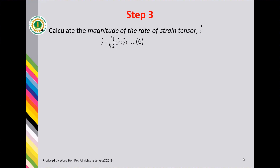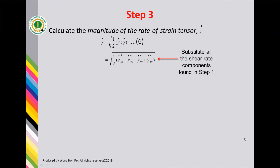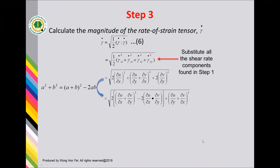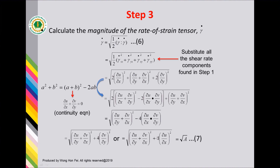Step three: calculate the magnitude of the rate of strain tensor, given by equation 6. Many of us may not be familiar with equation 6. The double-dot notation here is called the Frobenius norm, which is the square root of the summation of the squares of the elements in every row and every column. Substituting all shear rate components from step one, I apply the identity a² + b² = (a+b)² - 2ab. The term (a+b) is actually the continuity equation and equals zero, so that term drops out. The expression can be simplified, and I will use square root of A to represent any of these three equivalent forms.